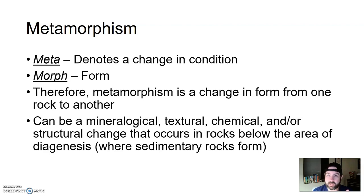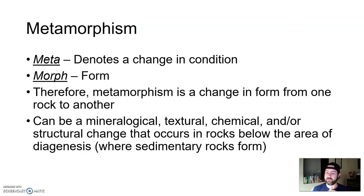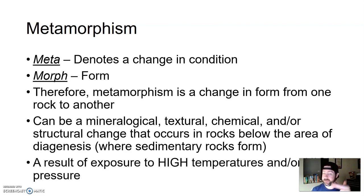That change can be mineralogical, textural, chemical, or structural — a change that occurs in rocks below the area of diagenesis. Diagenesis is the area where sedimentary rocks form, where there's a little bit of heat and pressure to lithify sediment into sedimentary rocks. But below that area, deeper in the earth, or places where there's higher temperatures or higher pressures, that will result in metamorphism.